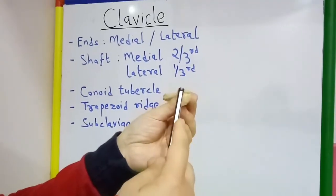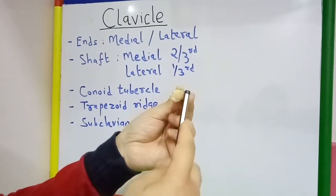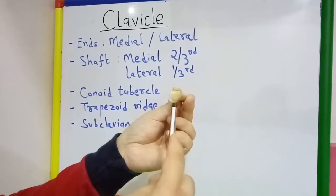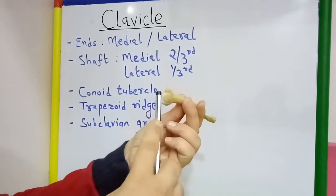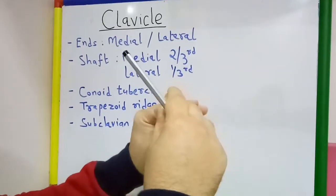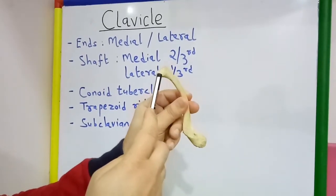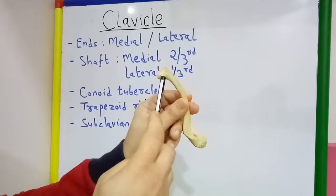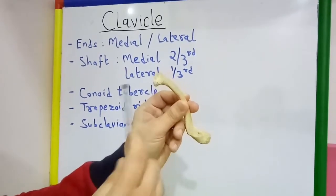The medial end is larger and quadrangular and it articulates with the manubrium sterni to form the sternoclavicular joint. The articular surface also extends on the inferior aspect of the medial end, which will articulate with the first costal cartilage.